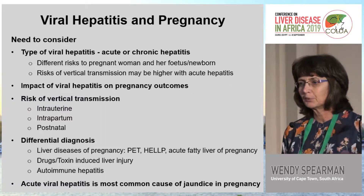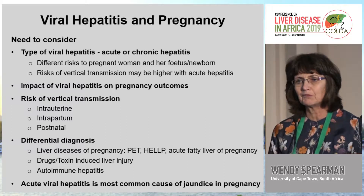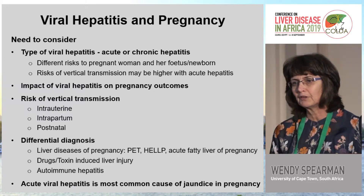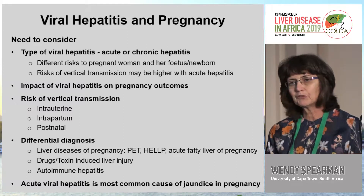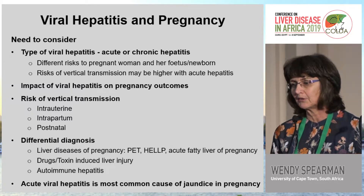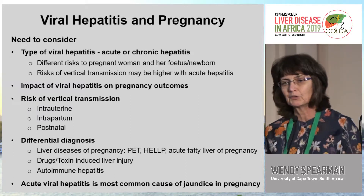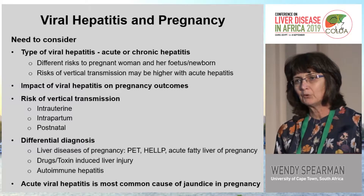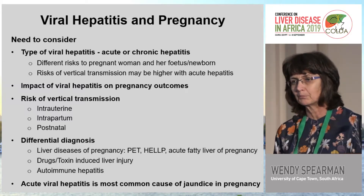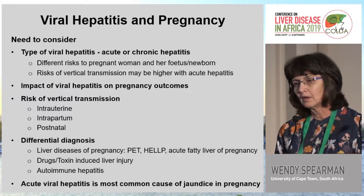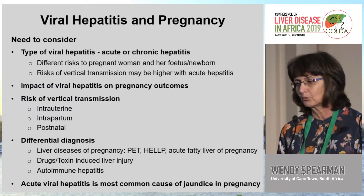When looking at viral hepatitis in pregnancy, it's important to consider the type of viral hepatitis — is it acute or chronic — as this poses different risks to the pregnant woman, but also to the fetus and the newborn child. The risks of vertical transmission are potentially higher with acute viral hepatitis. It's important to know the impact on pregnancy outcomes, the risk of vertical transmission — whether intrauterine, intrapartum, or postnatal. The top differential diagnoses include liver diseases of pregnancy such as preeclampsia, HELLP syndrome, and acute fatty liver of pregnancy, but always remember drugs and toxins, and in young women, autoimmune hepatitis. Acute viral hepatitis is probably the most common cause of jaundice in a pregnant woman.